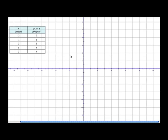Now, the first thing we have to do is plot the first point, which is (-2, 0), and so we're going to plot that on the x-axis at -2.